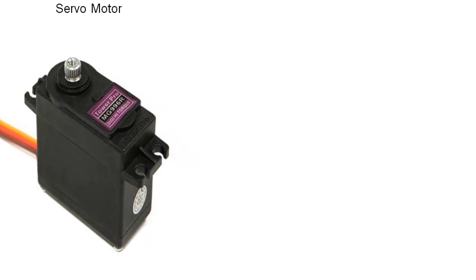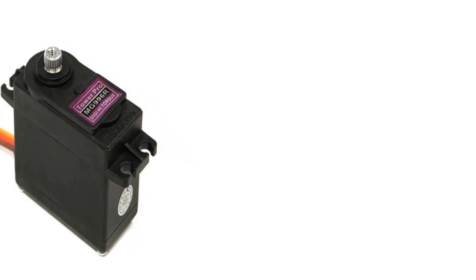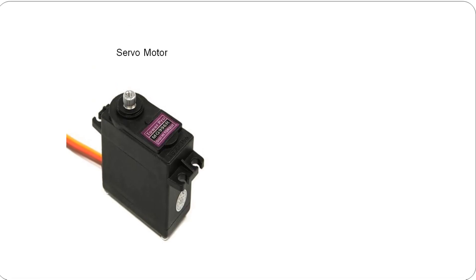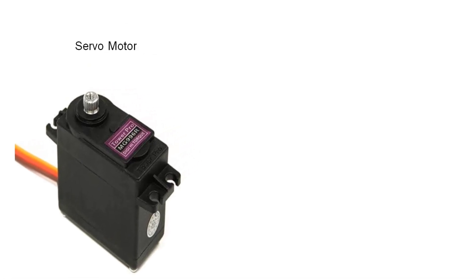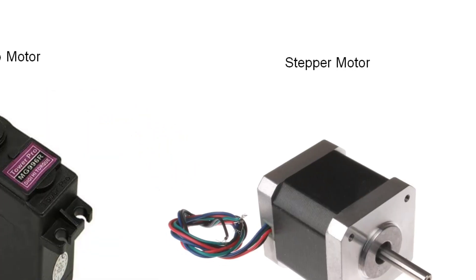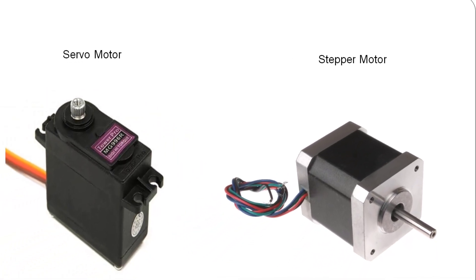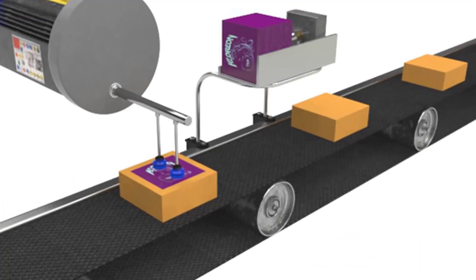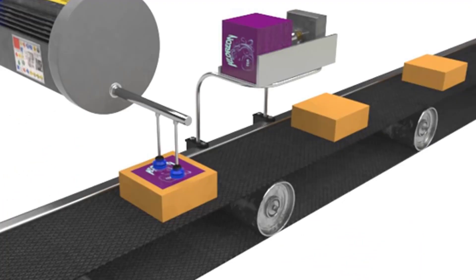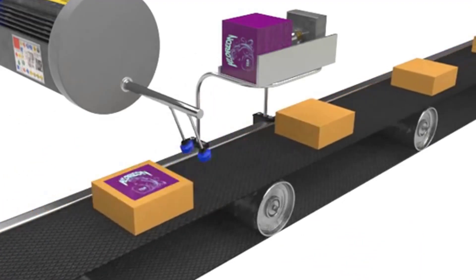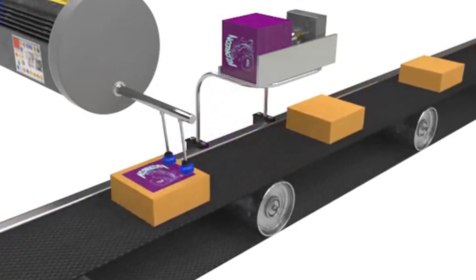On the other hand, servo motors are a better choice for systems requiring high speed, high accuracy, and high acceleration. The main trade-off between servo and stepper motor is speed. Servo motor is a better choice for applications and projects that require high speed, high acceleration, and high accuracy. The trade-off here is higher cost and complexity.